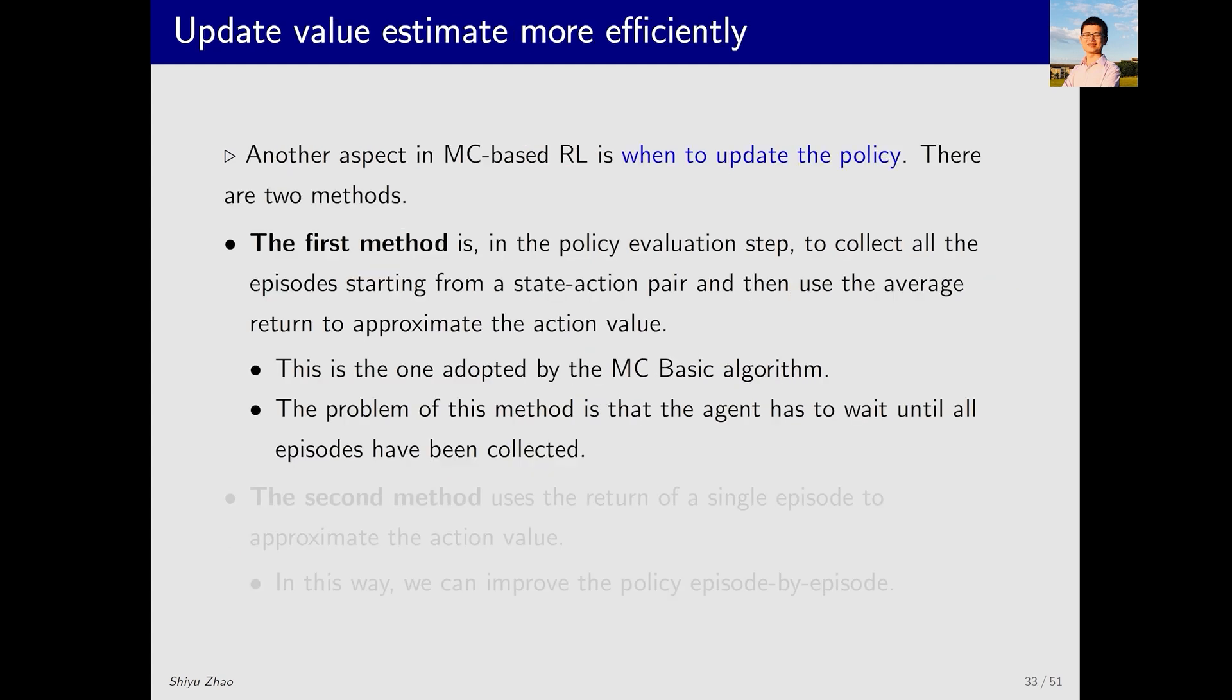In addition to making data utilization more efficient, we can also make policy updates more efficient. There are two methods for this as well. The first method, also used in MCBasic, involves collecting all the episodes starting from a state-action pair, averaging their returns to approximate the action value. However, the problem with this method is that the agent has to wait until all episodes have been collected, leading to time wastage and low efficiency.